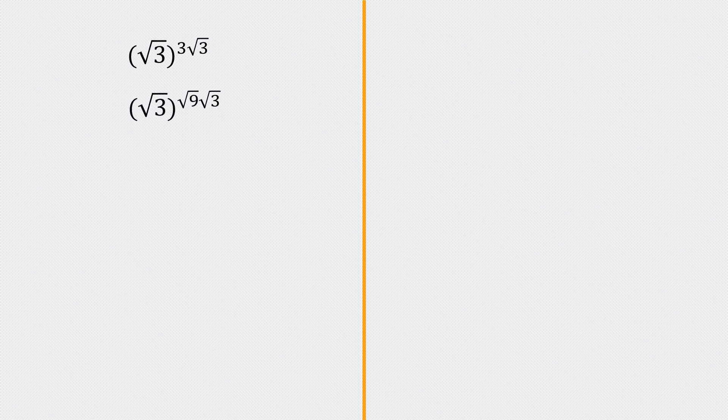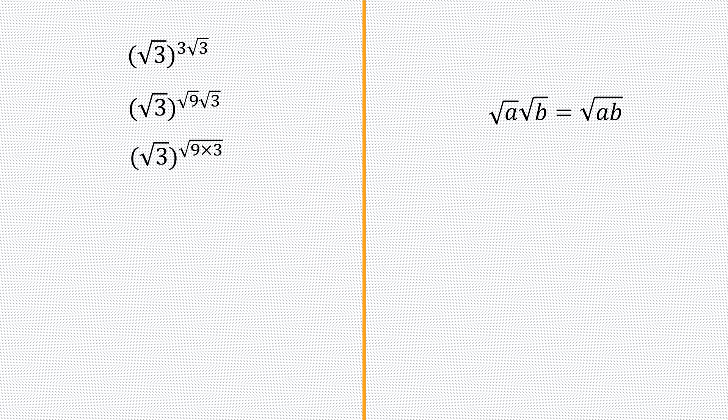Now I can write root 3 as the same as the square root of 9, because the square root of 9 is indeed 3. I can write 3 as the square root of 9, then apply the rule: the square root of a times the square root of b equals the square root of a times b. So root 9 times root 3 equals root 27, meaning we get the square root of 3 raised to the power of the square root of 27.